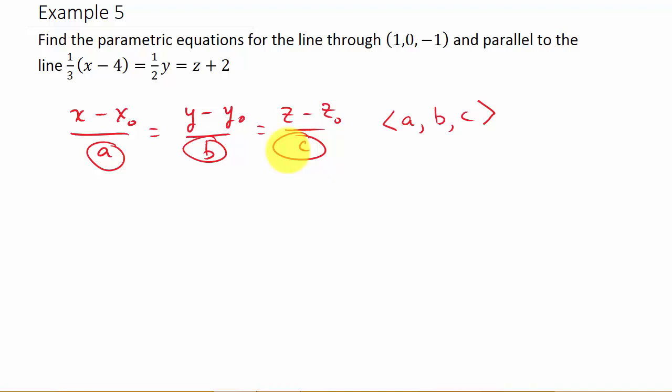So you can see here we have 3, that would be our a. The 2 would be our b. And for this one, well, that's over 1. So the 1 would be our c. And here we have x naught, y naught, and z naught.